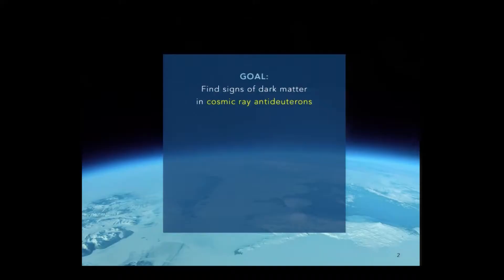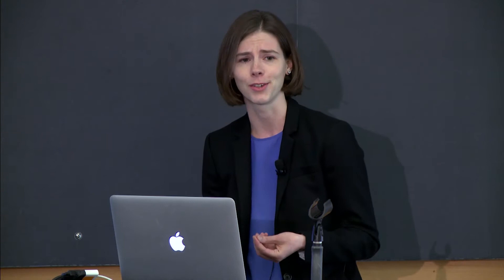So I'll try to convince you of that by first motivating our goal. So why are we looking for signals of dark matter in, of all things, cosmic ray anti-deuteron, where anti-deuteron means the bound state of an anti-proton and an anti-neutron, and cosmic ray just means coming to us from outer space. And then I'll describe the unique detection mechanism that we've come up with to look for these cosmic ray anti-deuteron, which involves them forming exotic atoms in a detector that floats on a balloon high above Antarctica.